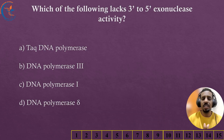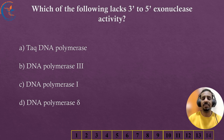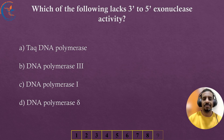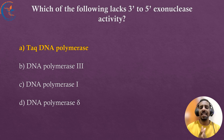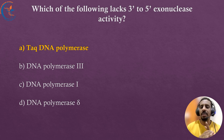The first question we have today: which of the following lacks 3' to 5' exonuclease activity? The correct answer is Taq DNA polymerase. Taq DNA polymerase lacks proofreading 3' to 5' exonuclease activity.